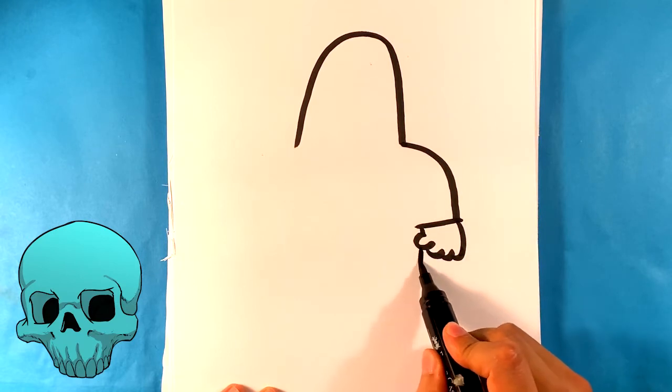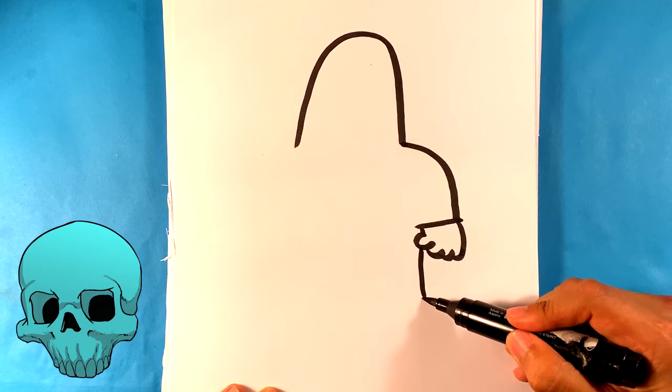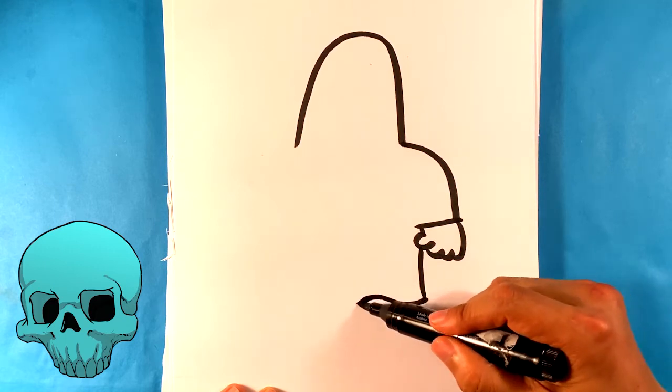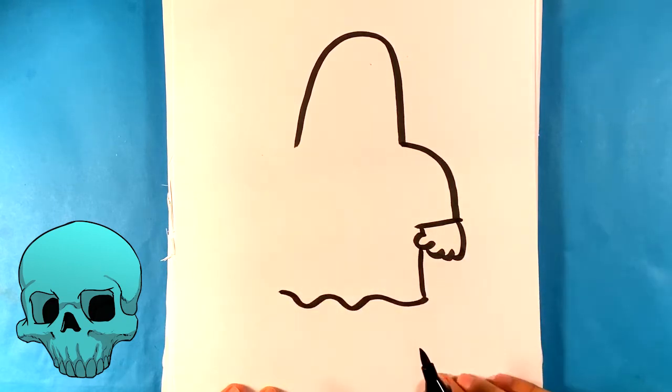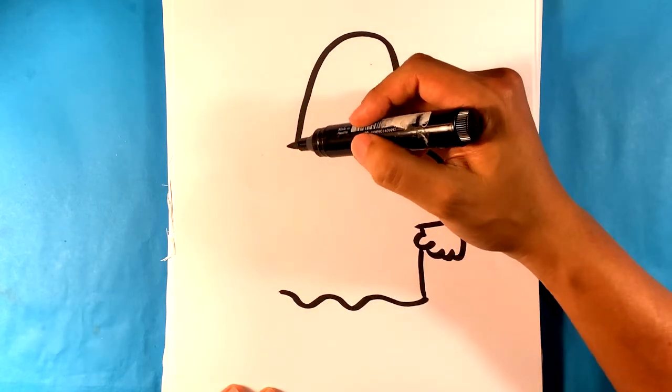Then I'm gonna pull down and that's the cloth. I'm gonna pull this wavy line for the bottom of the cloth.